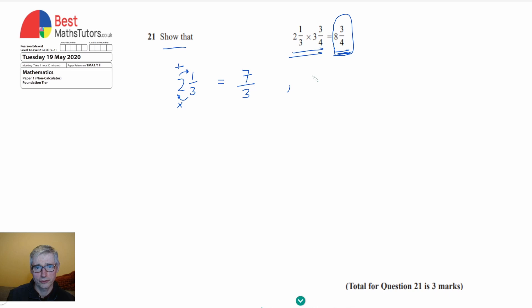And if we now look at the 3 and 3 quarters, we can see that if we do the same process, 4 times 3 is 12. Add the 3 on the top will give me 15. So I've got 15 over 4.